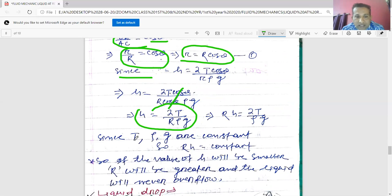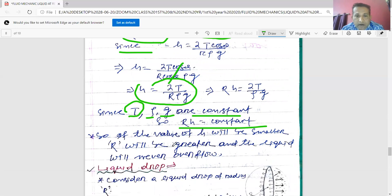So T surface tension, ρ density, g acceleration due to gravity, and R are all constant. So hR is equal to constant. So conclusion can be drawn. Now if the value of h will be smaller, R will be greater and the liquid will never overflow. That means if you cut the capillary height, the liquid will never outflow. It will adjust itself.